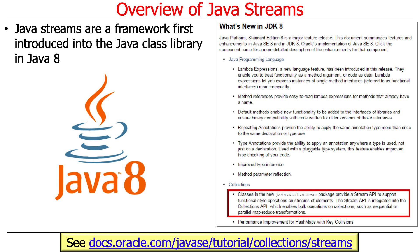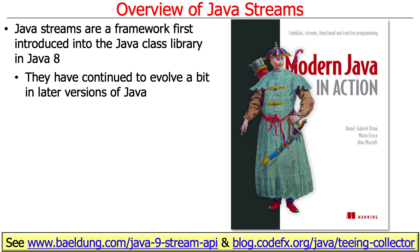This approach was a pretty radical step forward in Java relative to what had been there before, and it only made sense because they had built in the foundational features like lambda expressions, method references, and functional interfaces. Since Java 8, a few extra operations have been added to streams, but the bulk of what's there was there in Java 8. I highly recommend the book 'Modern Java in Action,' which describes both what was in Java 8 and what has come since.